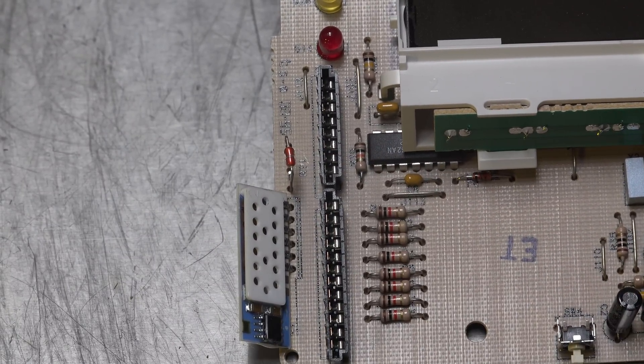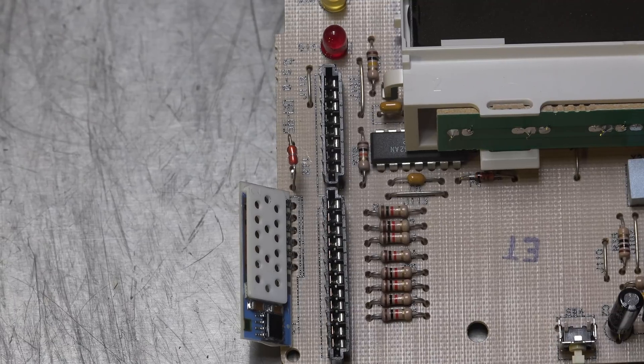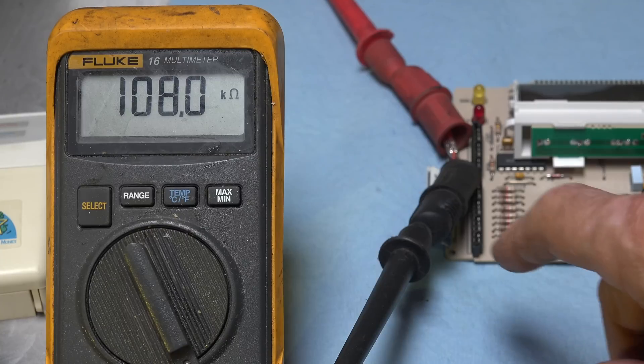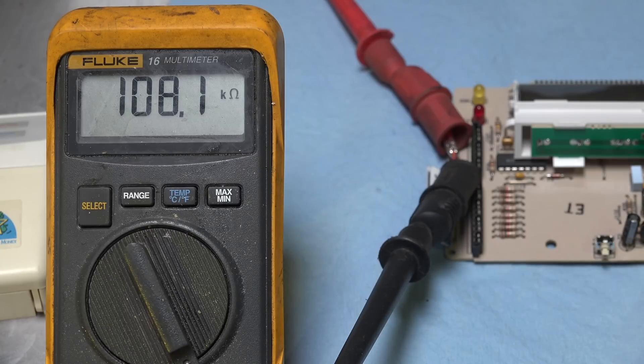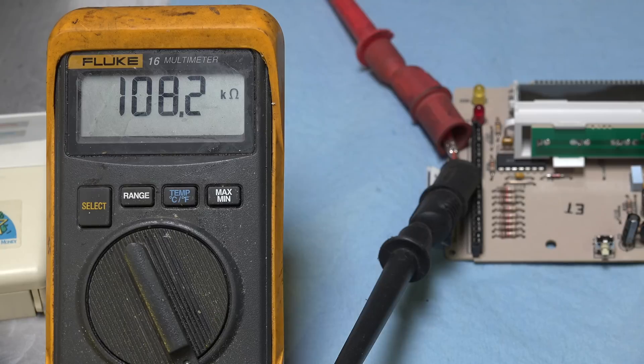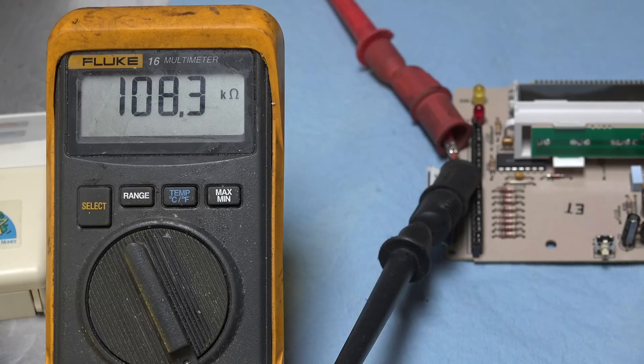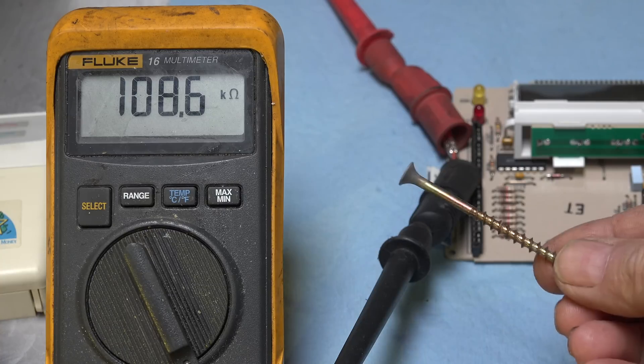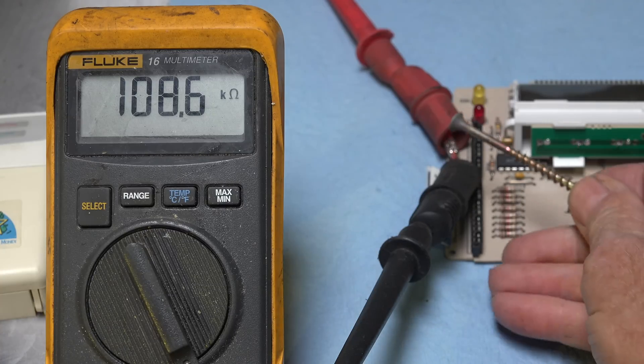The thermistor that changes resistance with the temperature, and we're going to test that. Now you can see I've set up with my probes across that thermistor and we're reading 108 kilohms. Now I'm going to warm up a screw. This is a screw I've warmed up. I'm going to place it near it.